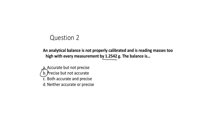Accuracy relates to closeness to the true value, so we're going to be off the true value. But precision relates to repeatability — the experiment will still be very repeatable.